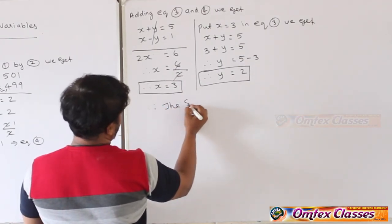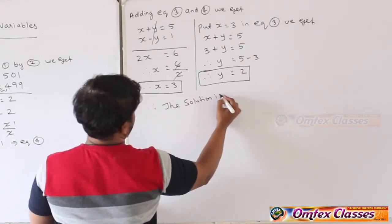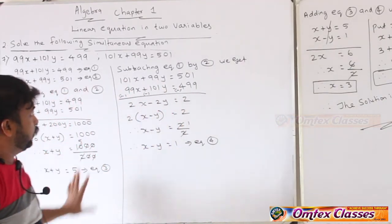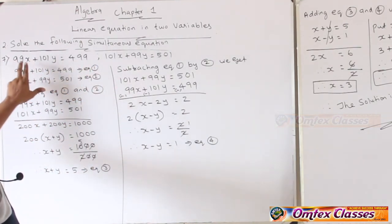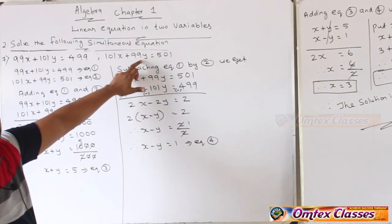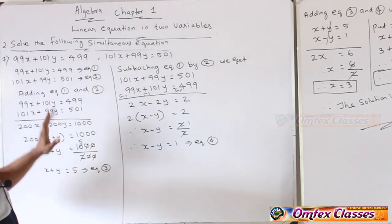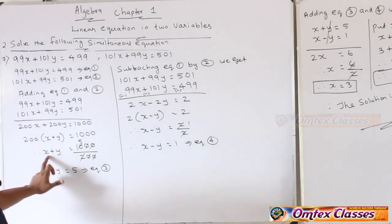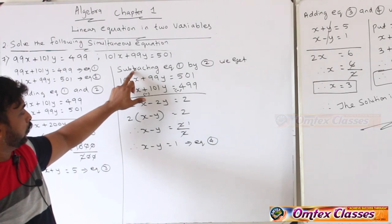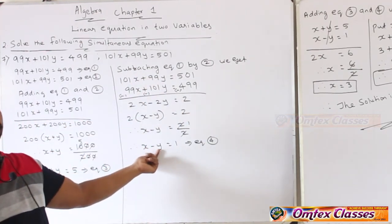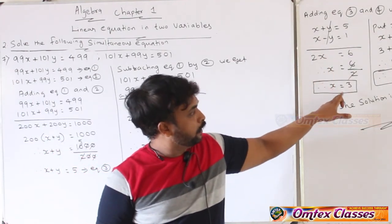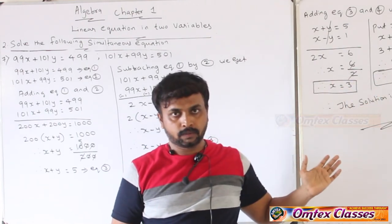Therefore, the solution is x = 3, y = 2. कुछ doubt रहेगा तो message करके पूछो। यह exam में आने वाला very important sum है। देखो — 99 x के बाजू में लेकिन 101 y के बाजू में, और 101 x के बाजू में 99 y के बाजू में। ऐसे pattern में simple rule follow करो: पहले add करो तो x plus y मिलेगा, फिर subtract करो, फिर add करो — x और y दोनों values मिल जाएंगी।